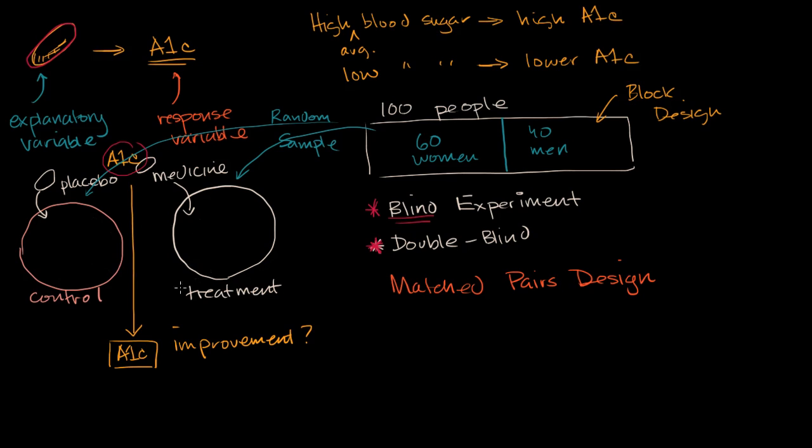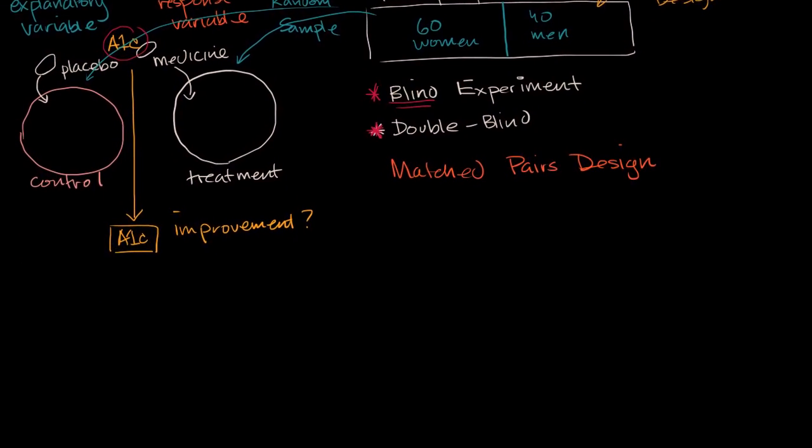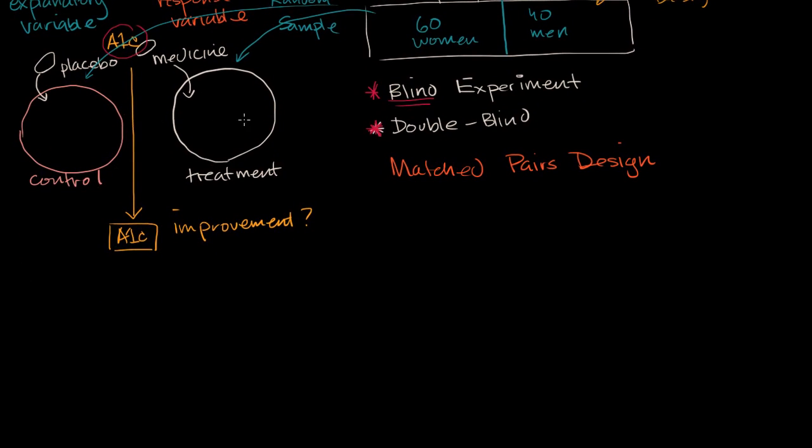So we could even extend from what we have here. We could imagine a world where the first three months, we have the 50 people in this treatment group, we have another 50 people in this control group that are taking the placebo, we see what happens to the A1Cs, and then we switch.